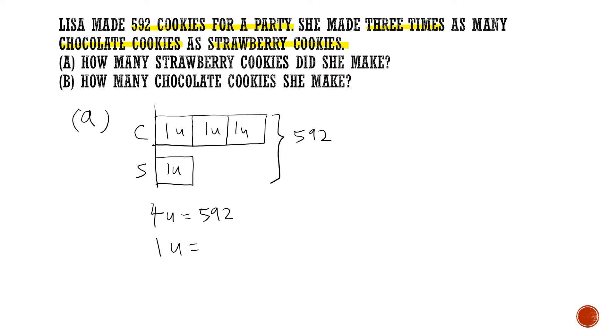You should get 148. You have to do the workings. I've already done the workings. That's why I can write out the answer. But you have to do the workings. So number of strawberry cookies is actually 1 unit. So this is the answer for part A.